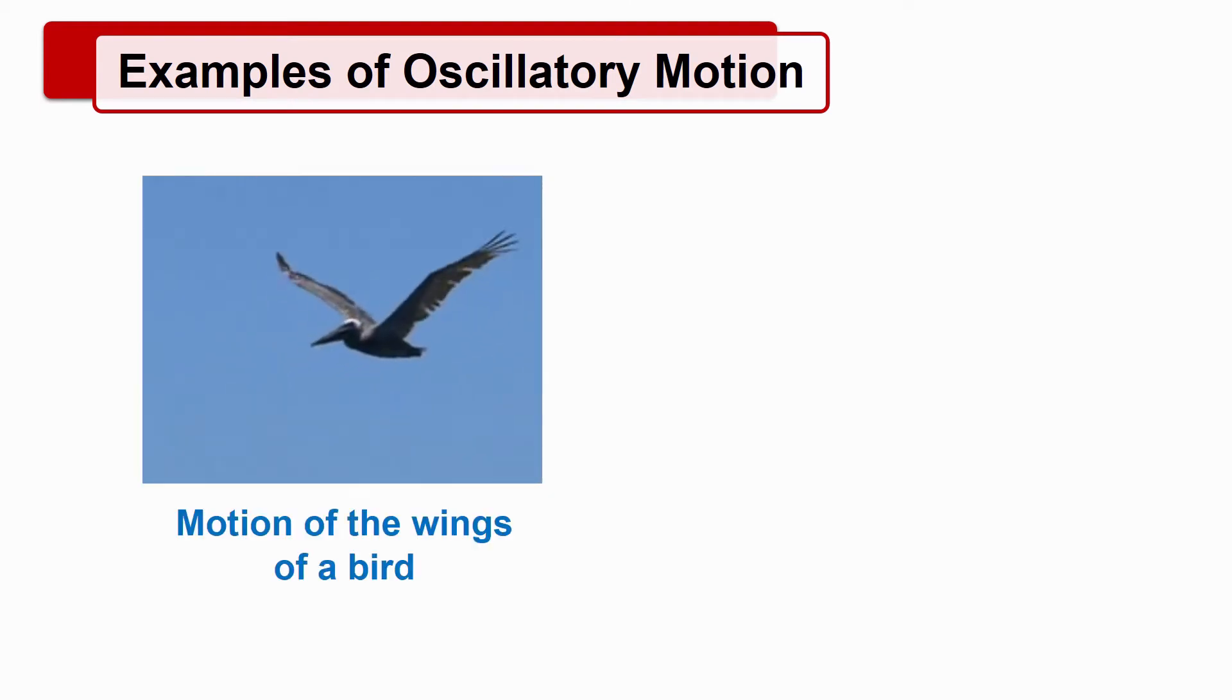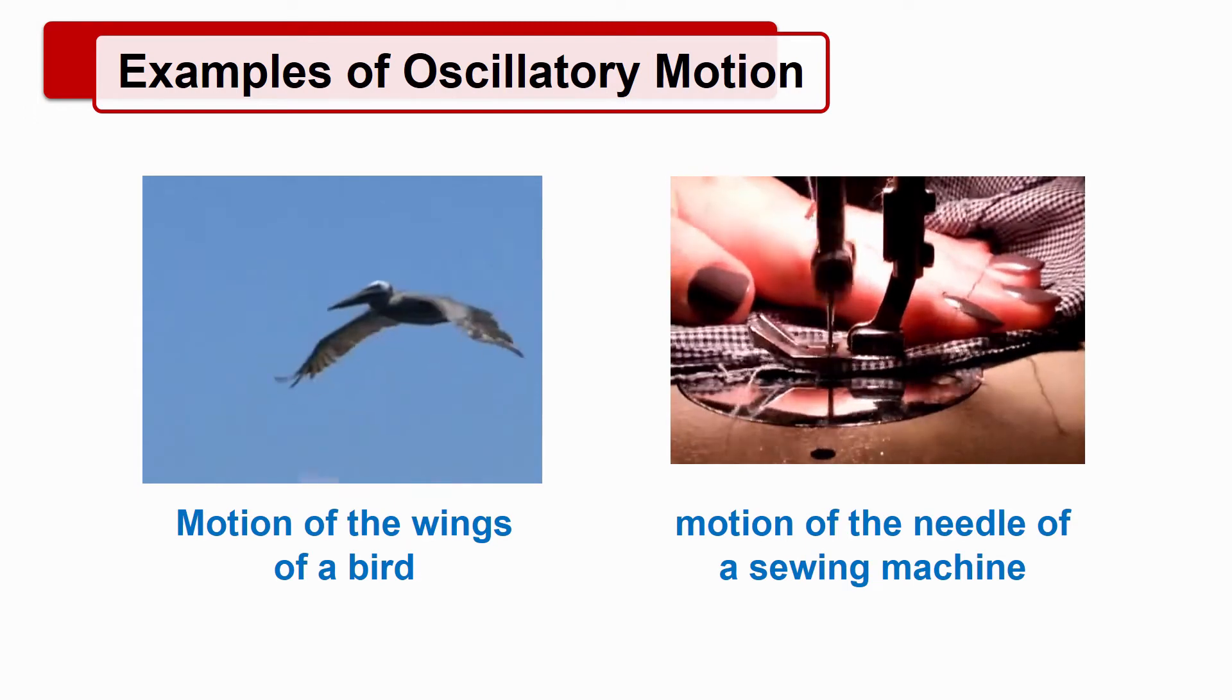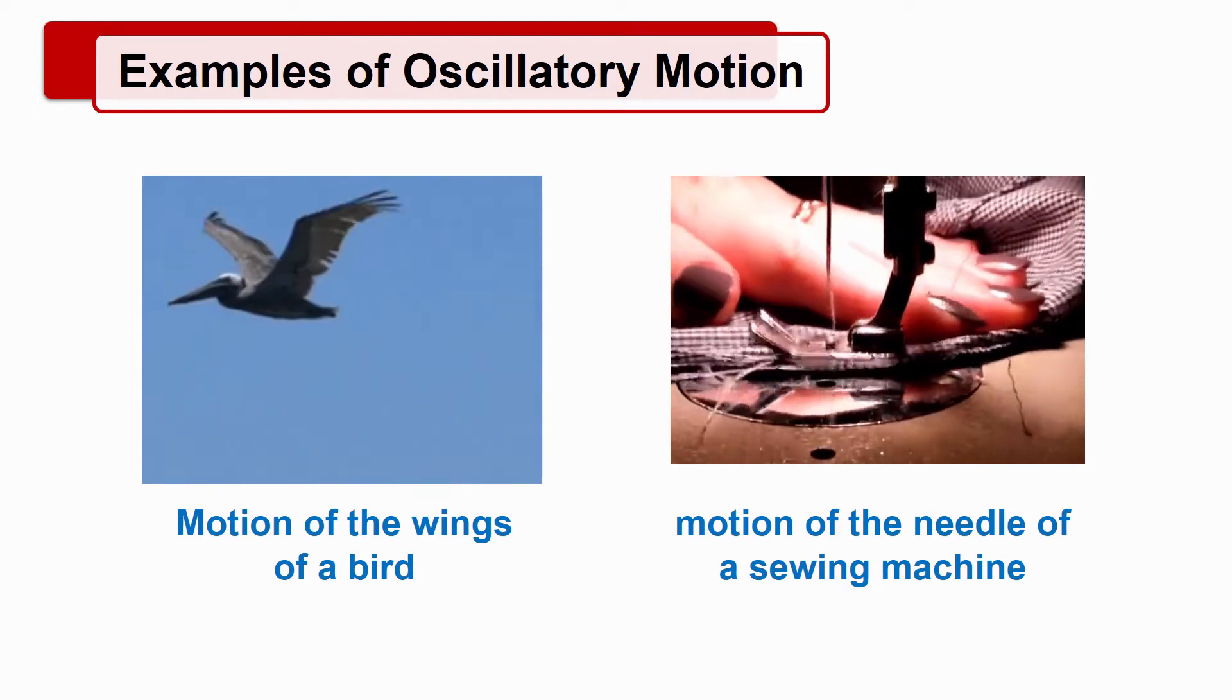Examples of oscillatory motion are motion of the wings of a bird, motion of the needle of a sewing machine, etc.